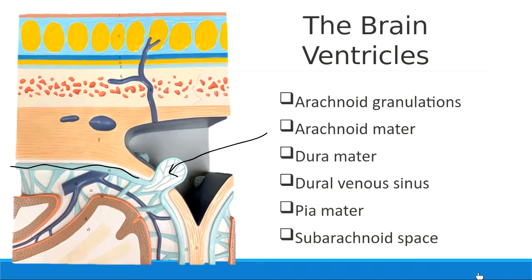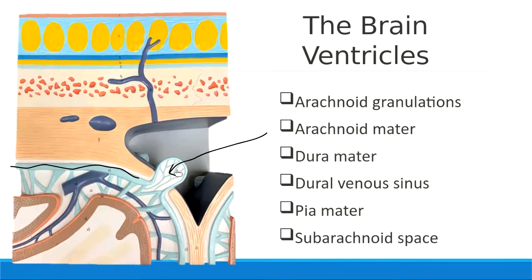It has to do with cerebrospinal fluid. There is cerebrospinal fluid that surrounds the brain in the subarachnoid space, found underneath the arachnoid mater. Your brain is constantly making cerebrospinal fluid, which means you constantly need to get rid of it. These leaky bubbles release the extra cerebrospinal fluid into the dural venous sinus, a blood vessel in the dura mater. This is how we take cerebrospinal fluid and get it away from the brain — we leak it back into the bloodstream.